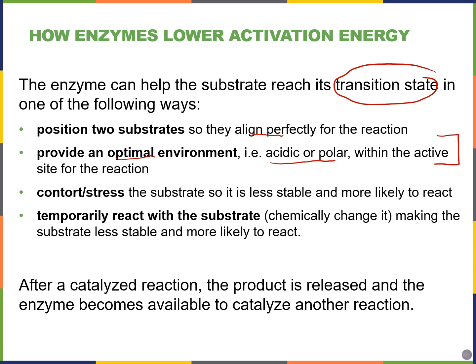Sometimes people say enzymes are kind of like matchmakers for couples — they speed up the likelihood or the chance that the couples will get together. The enzyme might even contort or stress the substrate so it's less stable and more likely to react, or it temporarily reacts with the substrate directly. It might chemically or temporarily change it so that it's more likely to react. But at the end of the reaction, the enzyme becomes available again to catalyze the next reaction — the enzyme is unchanged at the end of the reaction.